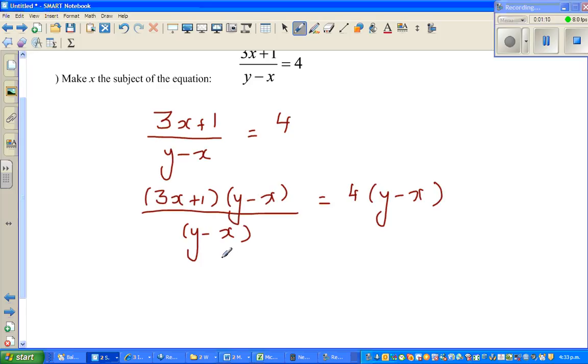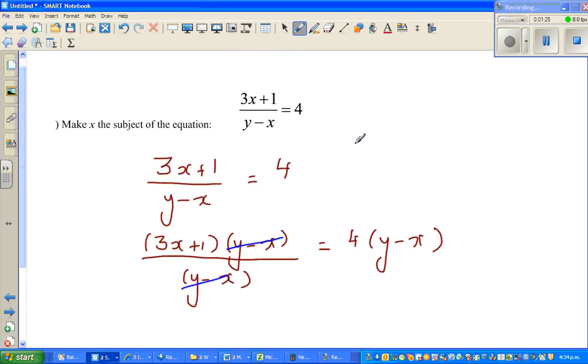As I have multiplied the left hand side with y - x, I had to do the same thing on the right hand side. So here y - x can be cancelled. One thing should be given here: x is not equal to y, or y is not equal to x, because you can't cancel if x and y are equal. This is a condition that should be given.